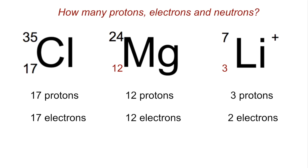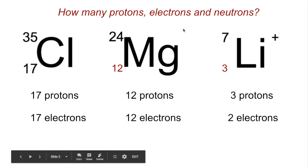And then finally, to get the number of neutrons, we simply subtract the atomic number from the mass number. That's going to give us the number of neutrons. So we've got 18, 12, and 4.